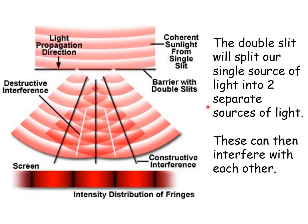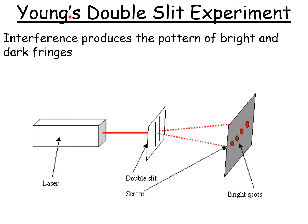Just to remind you about interference: we're talking about a single wave which is split into two wave fronts, which can then interfere, and you get this lovely interference pattern where you get bright, dark, bright, dark fringes. This was called Young's double slit experiment, and we use a double slit to create this interference pattern.